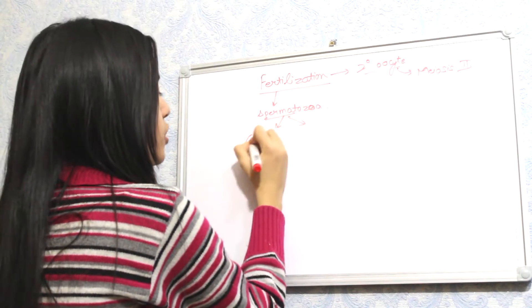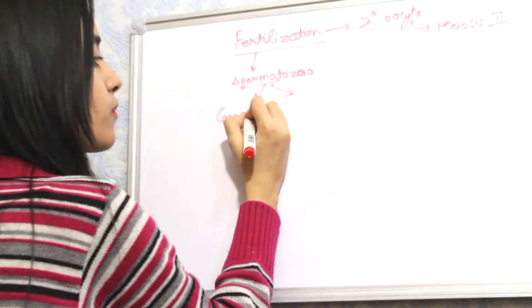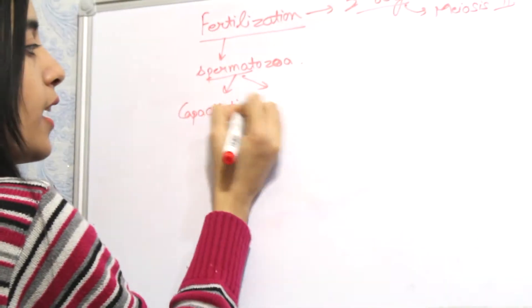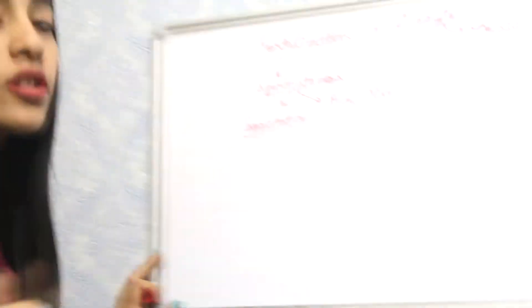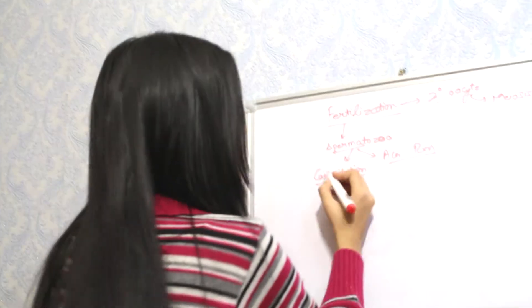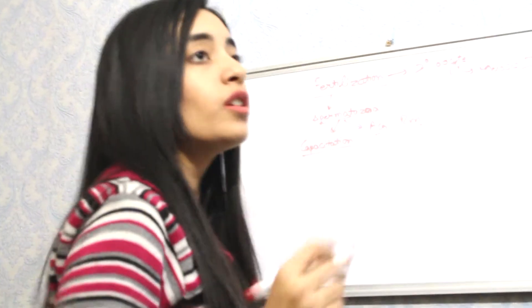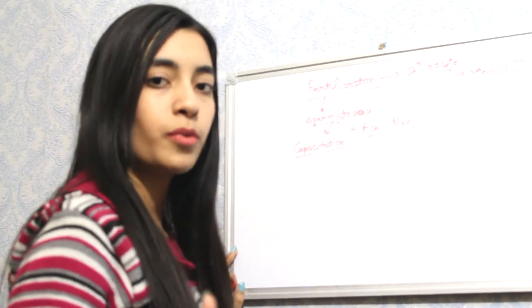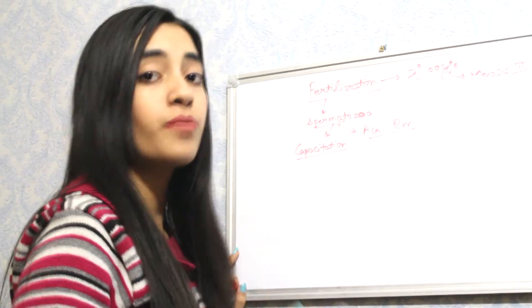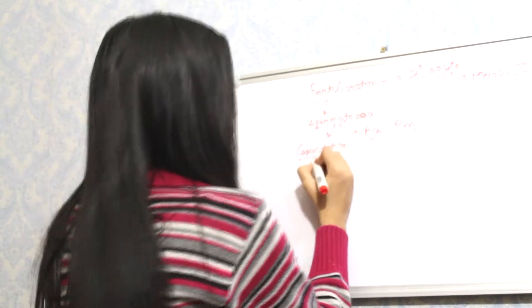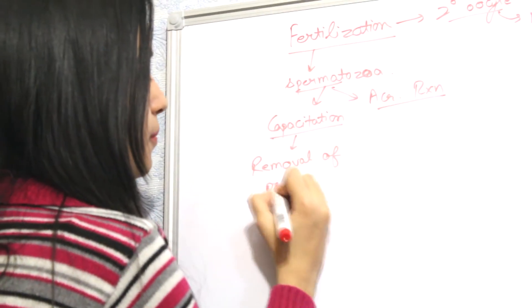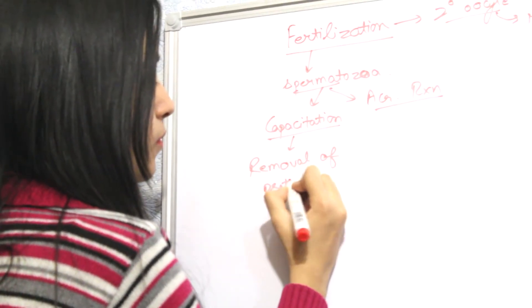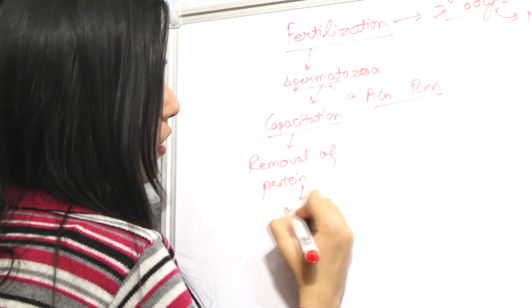Before fertilization, the spermatozoa undergoes two main processes: capacitation and acrosome reaction. Capacitation is the removal of certain proteins from the spermatozoa, which makes it activated.